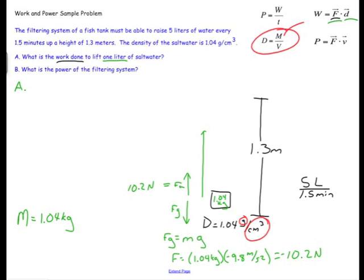So for part A I will find that the work is going to be equal to that upward force of 10.2 newtons multiplied by this 1.3 meters that it needs to be risen. And I will get 13.25. And that's joules. Remember a newton times a meter is the same thing as a joule. So there's my answer to part A.